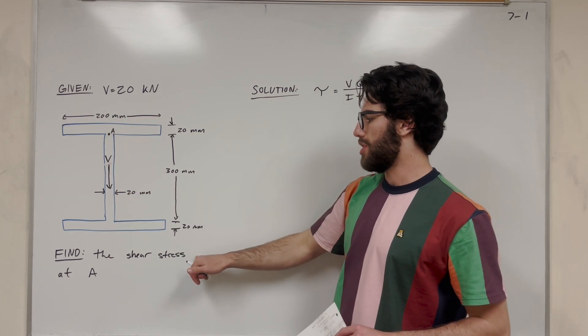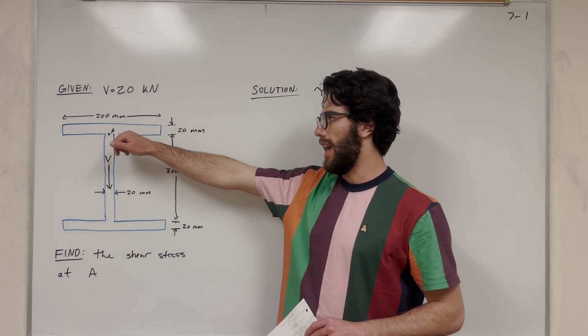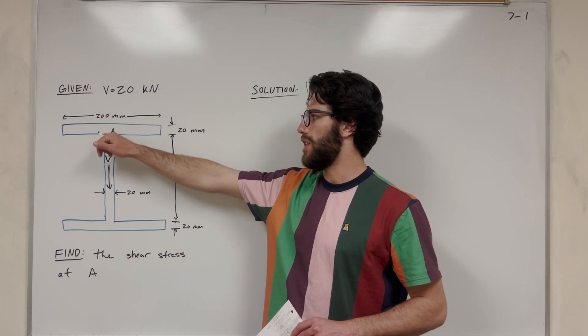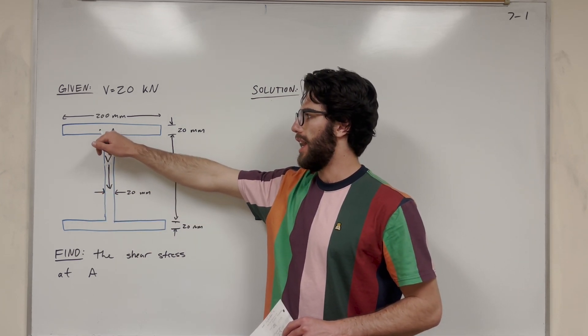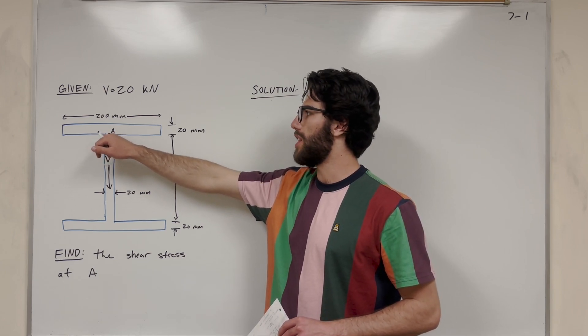And we want to find the shear stress at point A. So this point A lies on this vertical part on the web, and it's at this place where it's converting to the bigger beam.